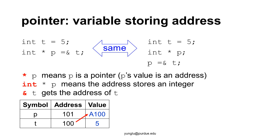For clarity, I add a marker to p's value to indicate that this is an address. Please remember that as a programmer, you have no control of the addresses. If you run the program again, the address of t may be different. We can initialize p immediately after creating this pointer, as shown on the left side. We can also create the pointer first and then assign t's address to p, as shown on the right side. The left side and the right side are exactly the same.